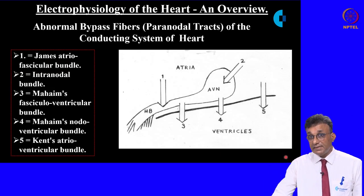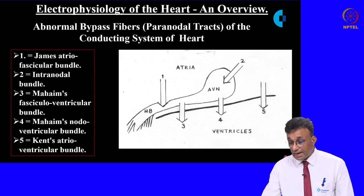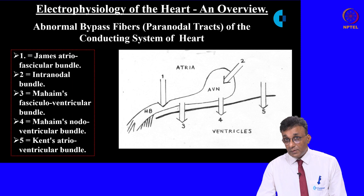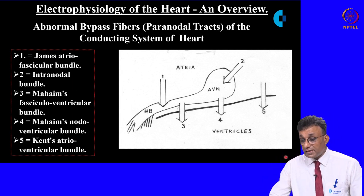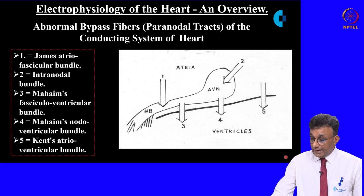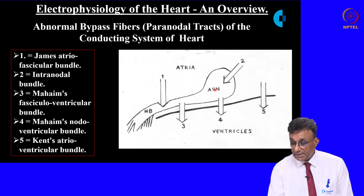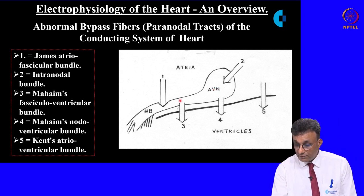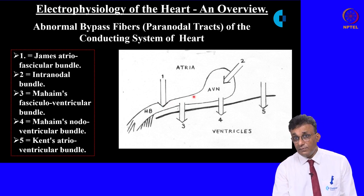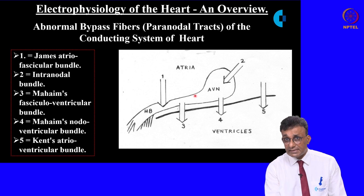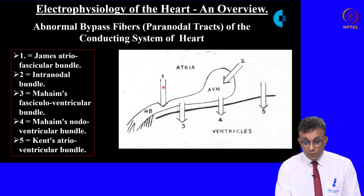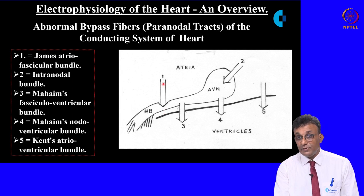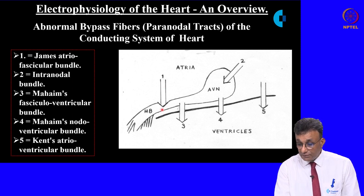Apart from the normal conducting system, a proportion of the population have certain abnormal bypass fibers, also known as paranodal tracts. In this diagram you can see the AV node and the bundle of His, referred to as the fascicle. Five paranodal tracts have been described.